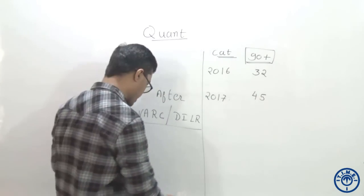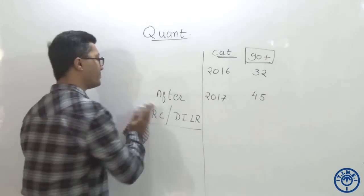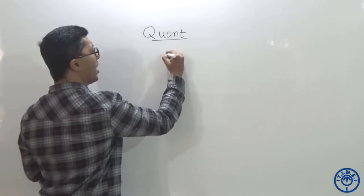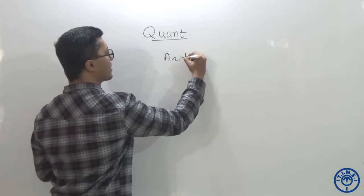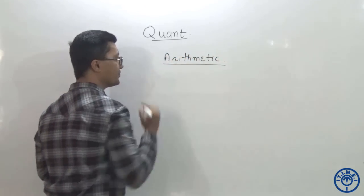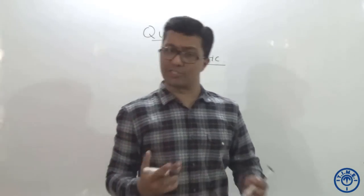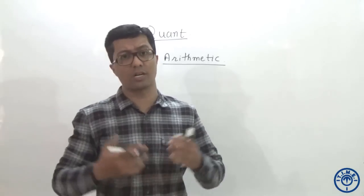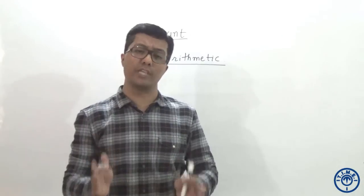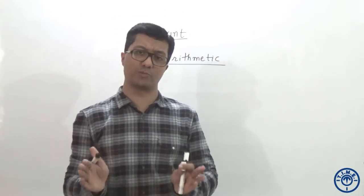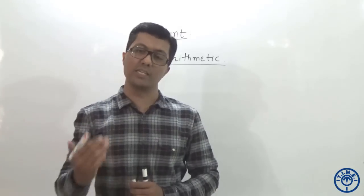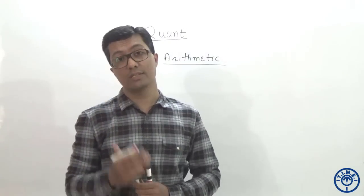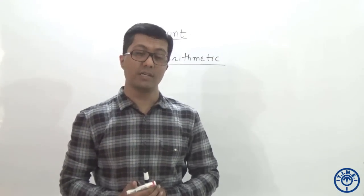Now, how to go about the Quantitative Aptitude section? We will divide this section in four different parts. The very first part is arithmetic. We are looking at percentages, profit and loss, simple and compound interest, time speed distance, time and work, average, allegation. How to gain the maximum out of this particular section? There are three keys. Key number one, you should know the basics. Key number two, you should know the assumptions. Key number three, you should work from the options.